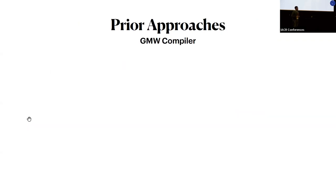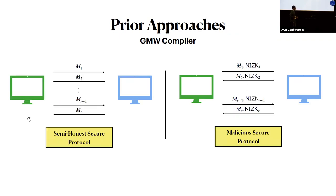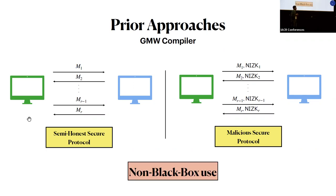Let me explain a couple of prior approaches. Starting with the seminal work of Goldreich, Micali, and Wigderson: at a high level, it takes a semi-honest secure protocol and attaches a non-interactive zero-knowledge proof showing that each message is correctly computed. This prevents a malicious adversary from deviating from the protocol specification. A nice feature of this compiler is that it is round-preserving, but it is not black box because generating zero-knowledge proofs requires the code of the underlying initial protocol.